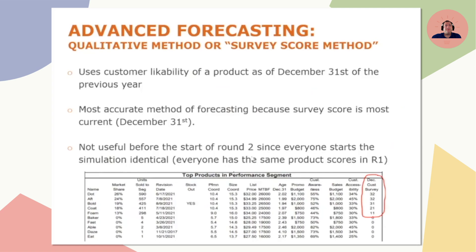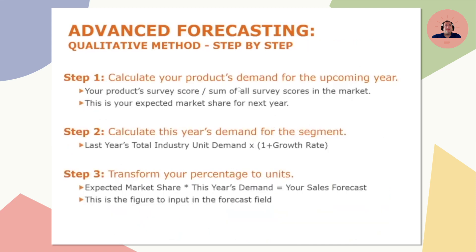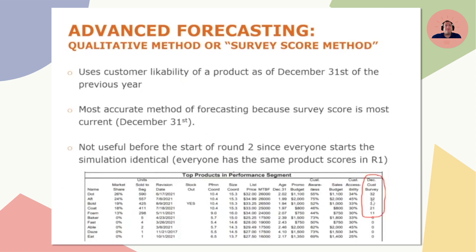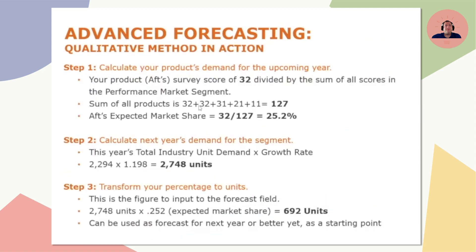What if you updated your product on December 28th, three days before the year ended? Last year we might have been selling a product that's totally different from what we're selling this year in year three. Your best indication for what customers think of your products now are the customer survey scores. The calculation to estimate your market share is simply to take your score and divide it by the sum of all the scores in the segment. In this example, looking at product AFT — that's 32 for our score — we divide it by the sum of all products in the segment, which equals 127.